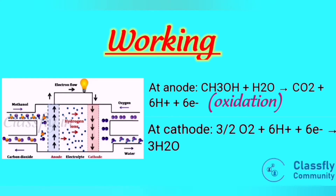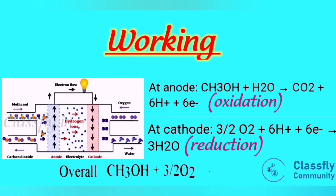At the cathode: 3/2 O₂ + 6H⁺ + 6e⁻ → 3H₂O. Oxygen supplied at the cathode reacts with the 6H⁺ ions and undergoes reduction to give H₂O. The overall reaction is: CH₃OH + 3/2 O₂ → CO₂ + H₂O.